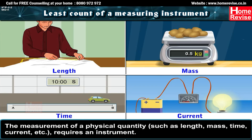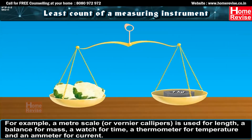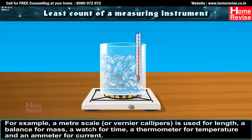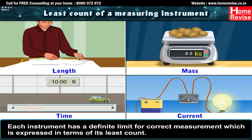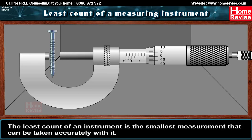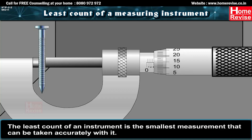For example, a meter scale or vernier calipers is used for length, a balance for mass, a watch for time, a thermometer for temperature, and an ammeter for current. Each instrument has a definite limit for correct measurement, expressed in terms of its least count. The least count of an instrument is the smallest measurement that can be taken accurately with it.